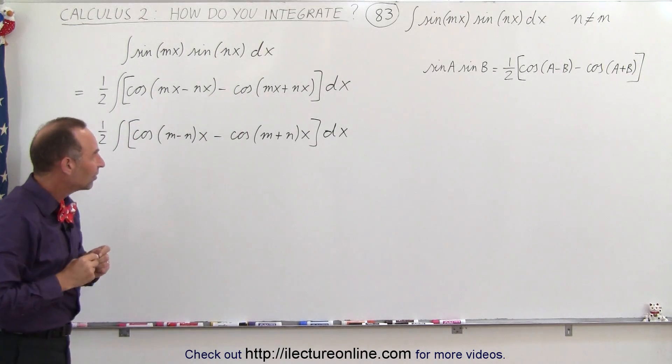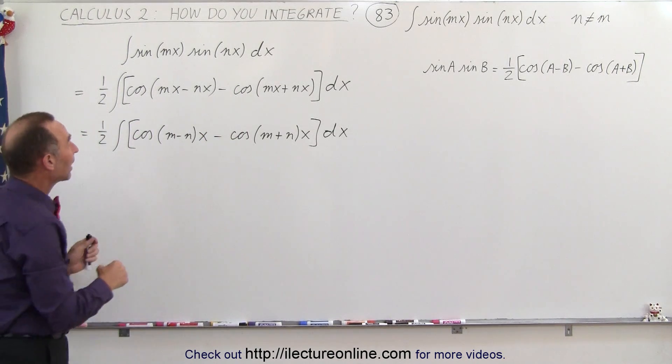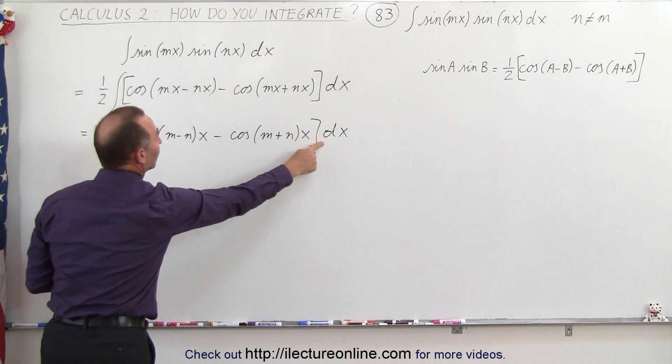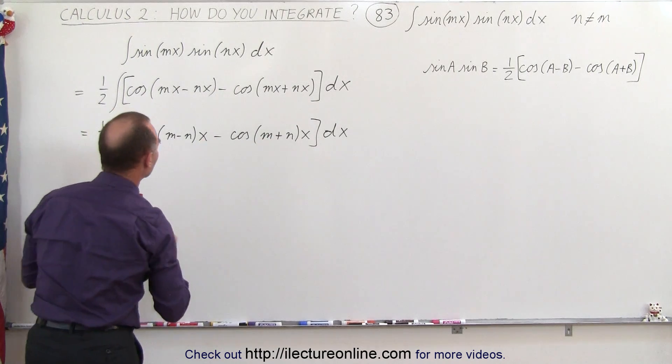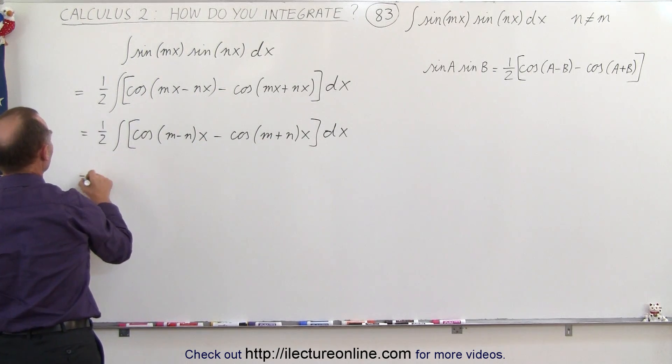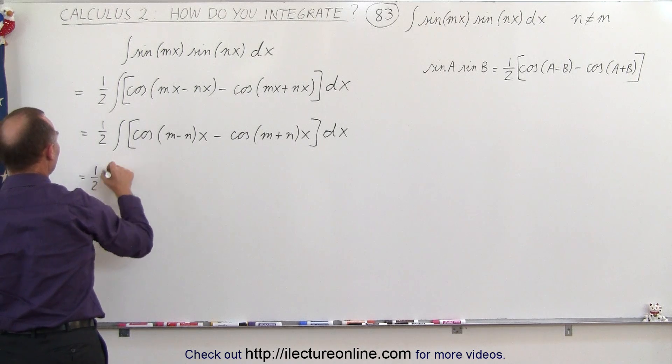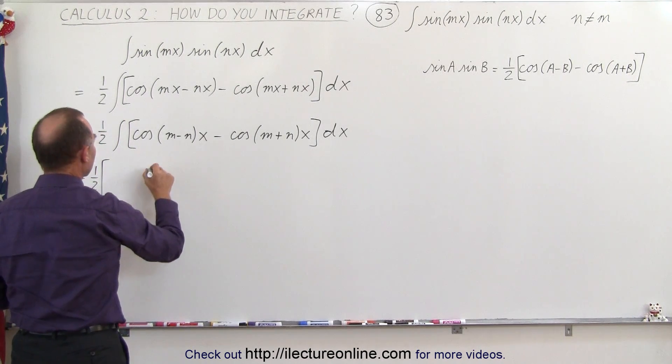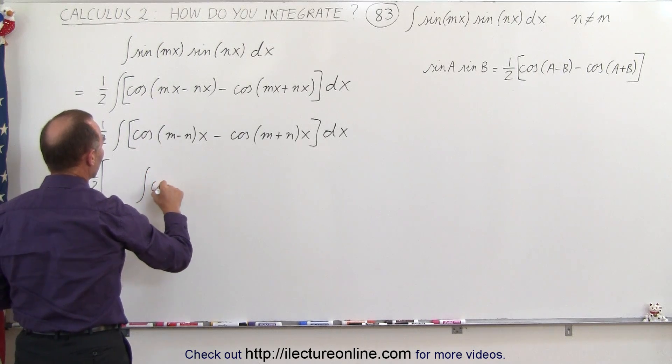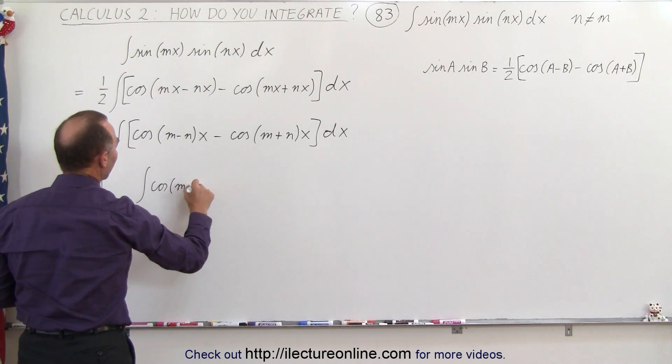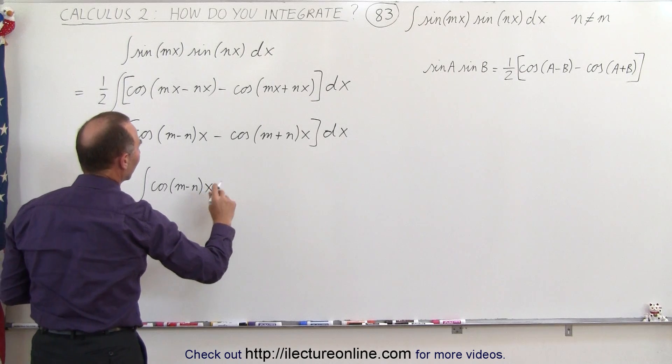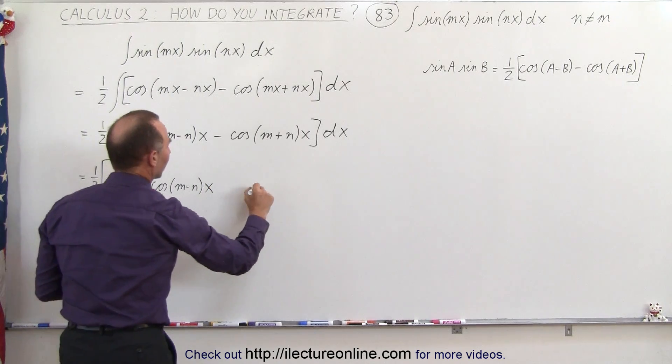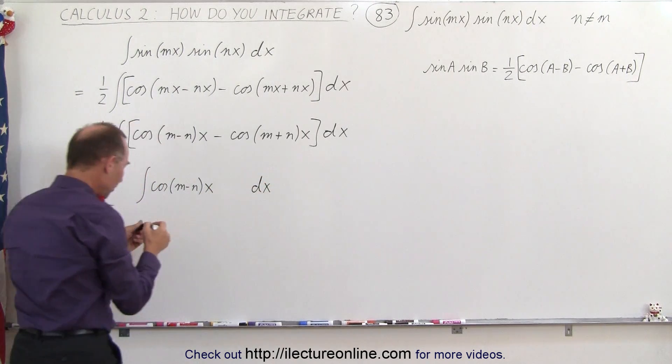And now we can see that we can easily integrate that if we have the proper dx. So let's split up into two integrals now. That means that this is equal to one-half times, we'll just leave one-half out. Here we need the integral of the cosine of m minus n times x times the proper differential.